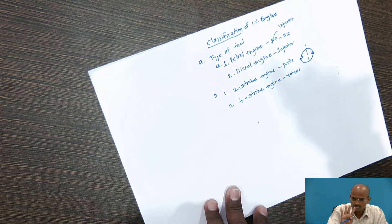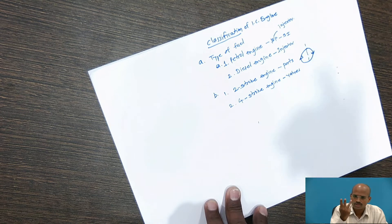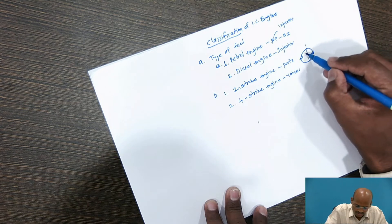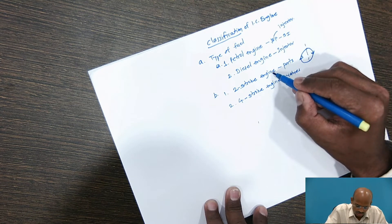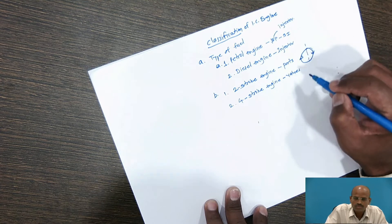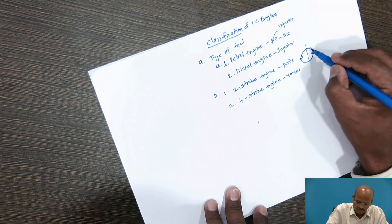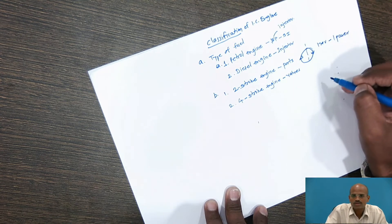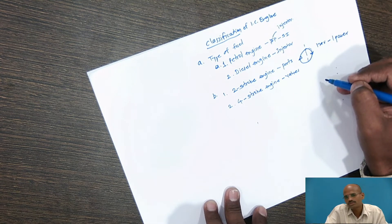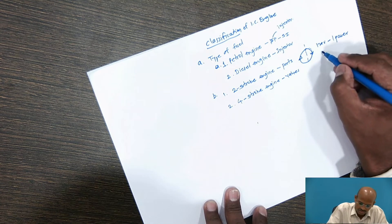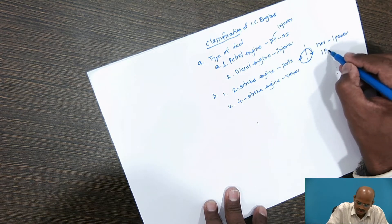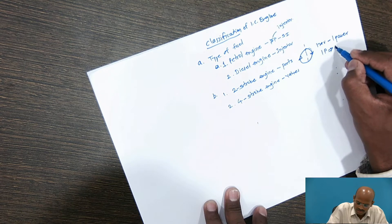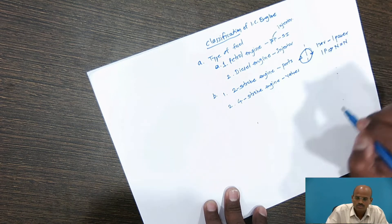The four strokes are: suction stroke, compression stroke, expansion or power stroke, and exhaust stroke. To complete these four strokes in a two-stroke engine, the crankshaft takes one revolution, meaning in one revolution there is one power stroke. So when we calculate the indicated power, we consider n equal to n.